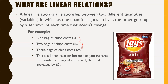Your first variable — the number of bags of chips — doesn't really have to go up by one each time. It just makes things a lot easier if it does. There are a lot of linear relations where it goes up by five each time, and then the other variable goes up or down by some other amount each time. As long as things are consistent and predictable, we have a linear relation.